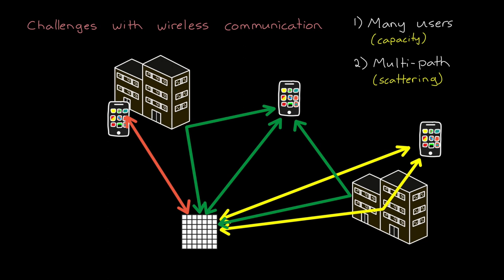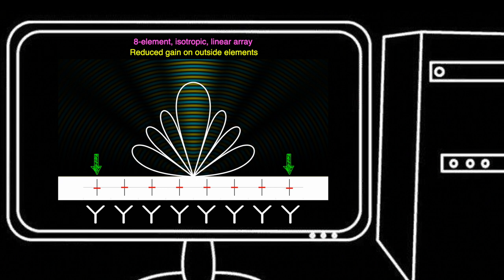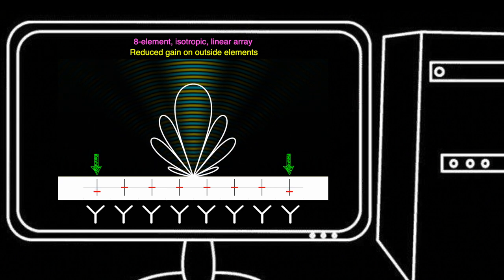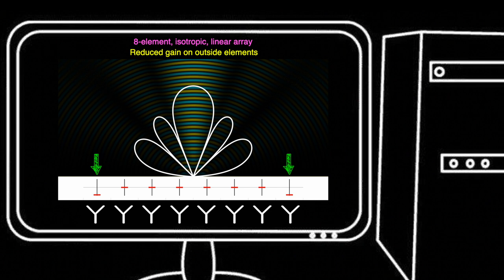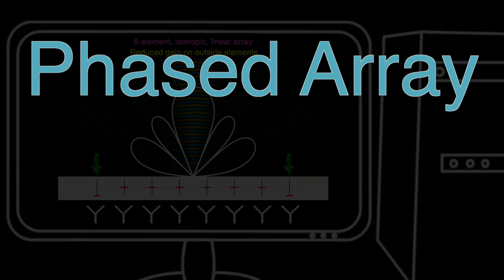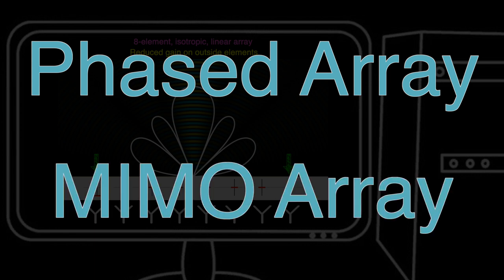To answer that, let's take a step back. From the previous videos, we know how to affect the shape of a beam by adjusting phase and gain to each element in the array. And we know of two ways to adjust phase and gain. We can use an analog phased array antenna, or we can use digital beamforming with a multi-input, multi-output array, or a MIMO array.